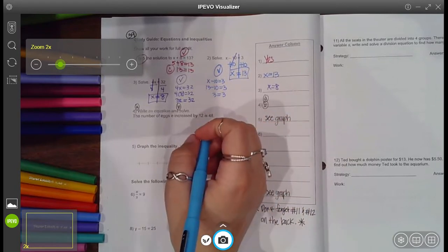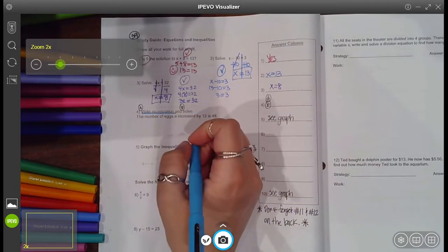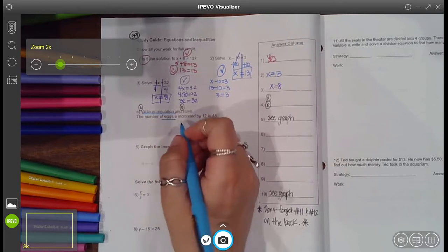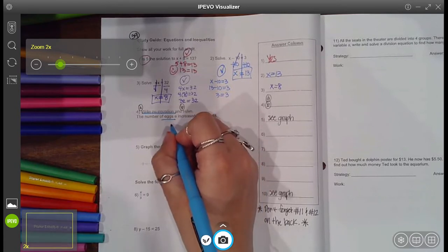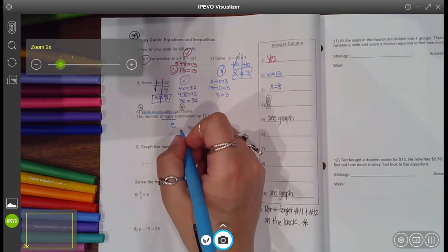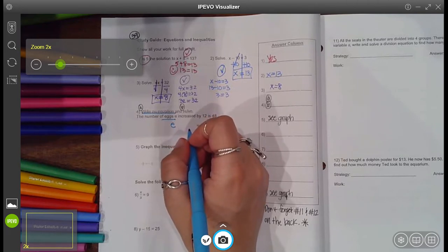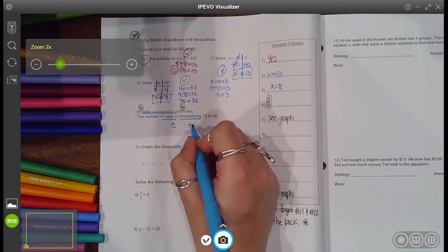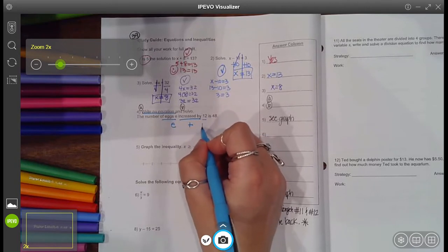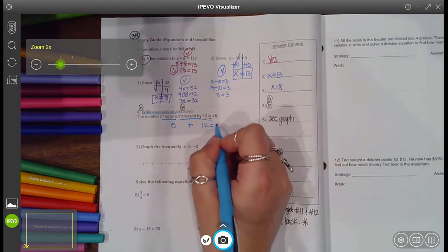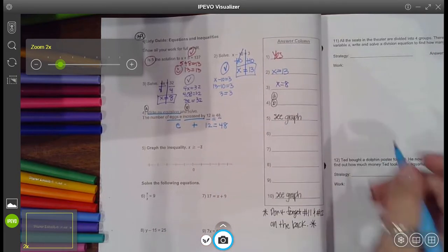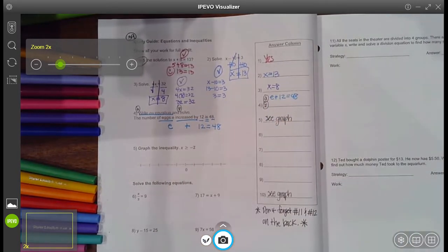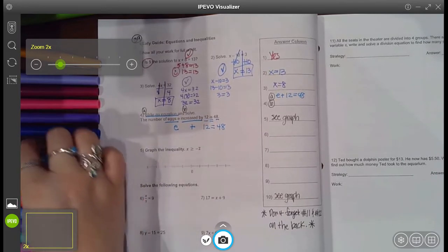Number four says write an equation and solve. So I'm going to write it as I read it. It says the number of eggs E, use whatever variable they say. If it's a lowercase E they want, then use a lowercase E. So the eggs E increased by, what does that mean? Add. Increased by what? 12 is means equals 48. There you go. That was me writing my equation: E plus 12 equals 48. I wrote the equation. Then they say, please solve it.